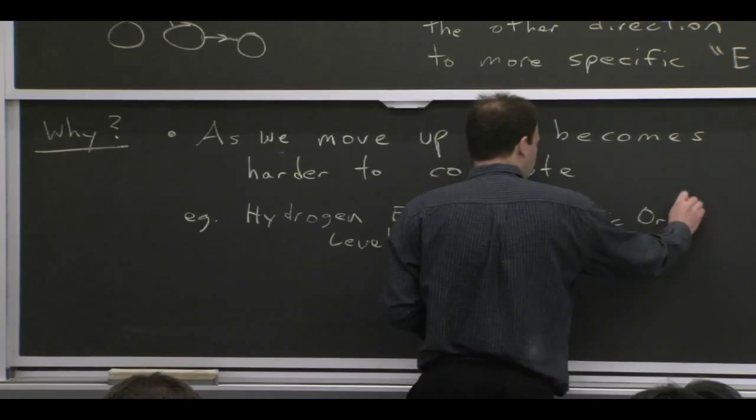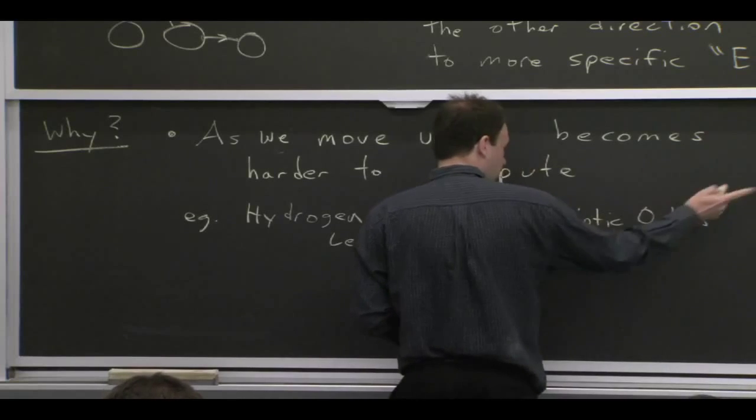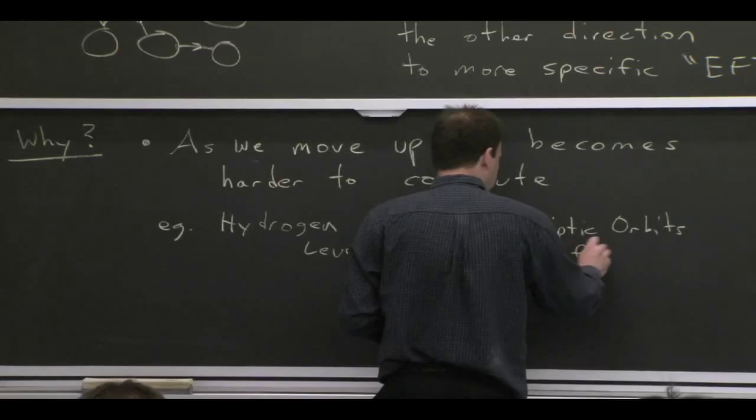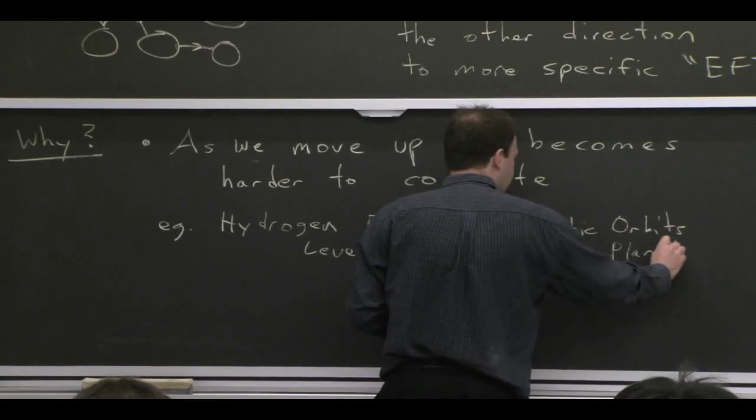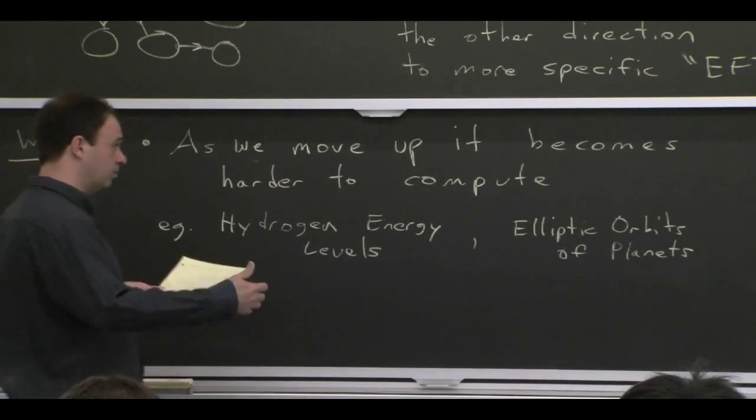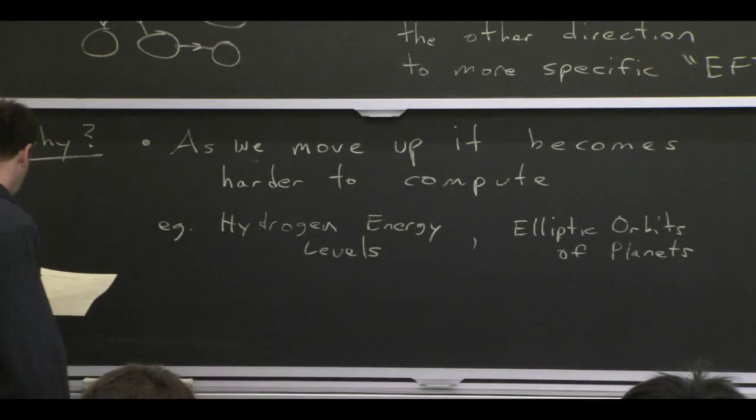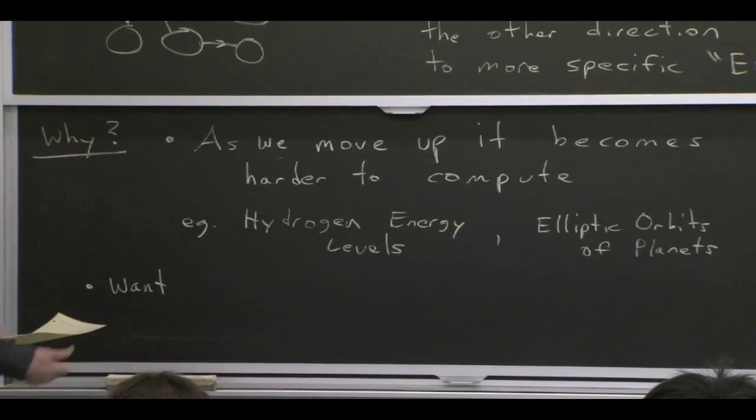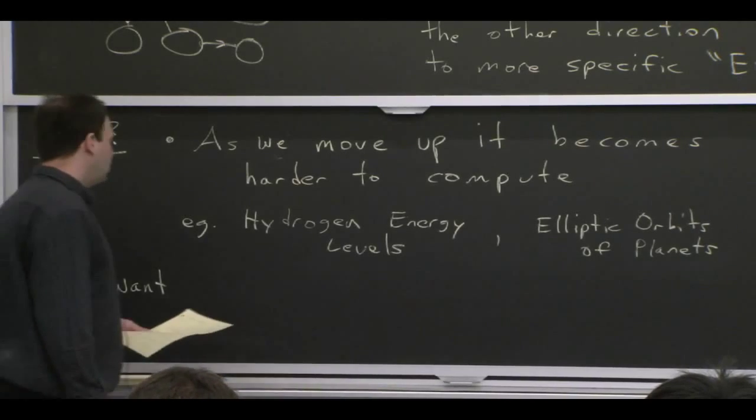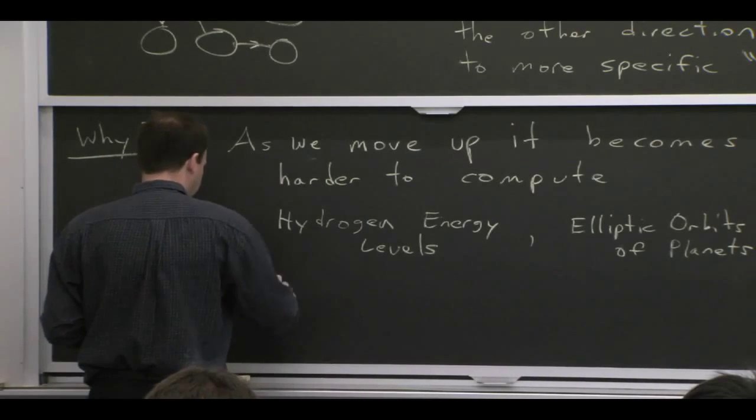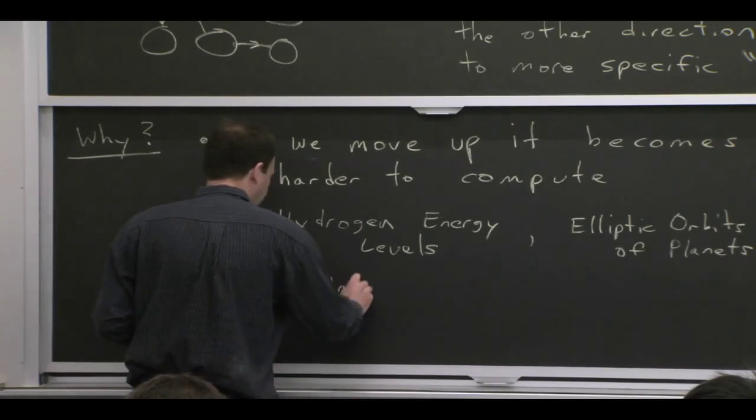Another is the elliptic orbits of the planets, which are easier in Newtonian gravity than in general relativity. And these are just two examples. There's many more, where one of these blobs is maybe too general for actually tackling the problem that you want to deal with. And by focusing in, which is what effective field theory allows you to do, you can get more ability to compute more accurately and in a simpler fashion.